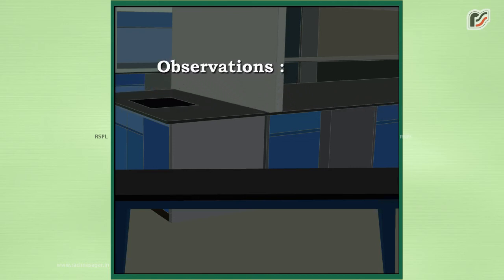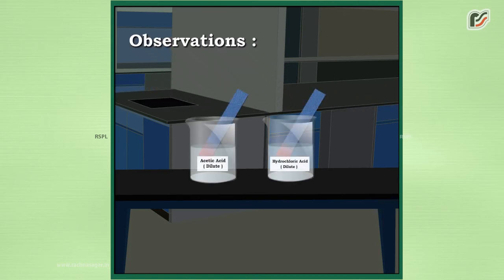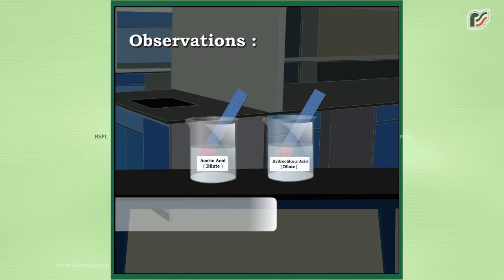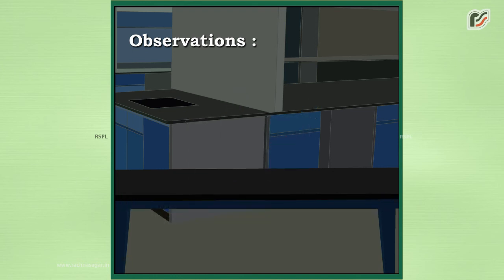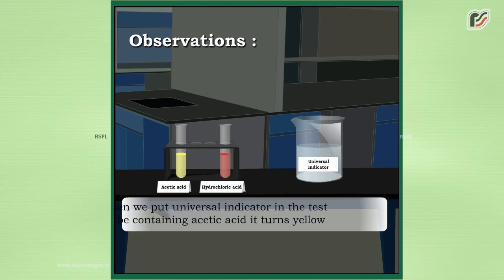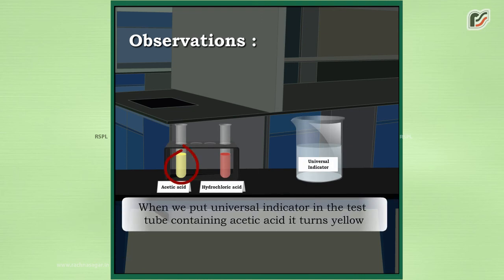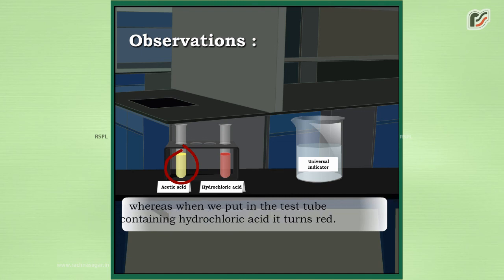Observations: Both dilute acetic acid as well as dilute hydrochloric acid turn blue litmus red. When we put universal indicator in the test tube containing acetic acid it turns yellow, whereas when we put it in the test tube containing hydrochloric acid it turns red.